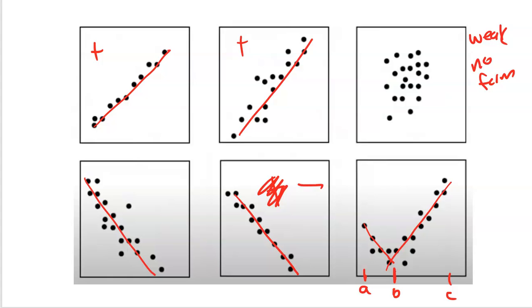So that's it for understanding scatterplots and talking about them. Just make sure that you talk about what you see, right? Mention direction, positive, negative, form, linear, nonlinear, no form, and then strength, moderate, weak, or strong as well.